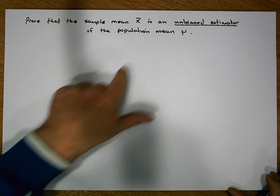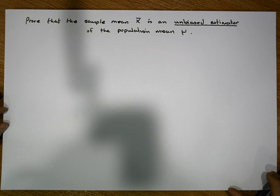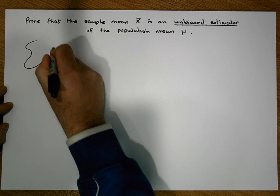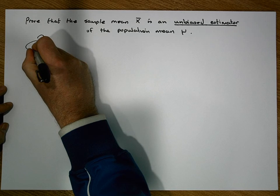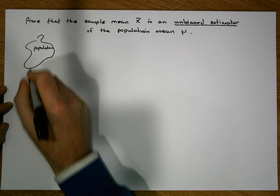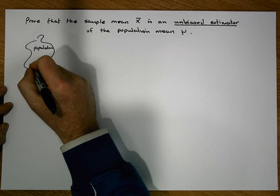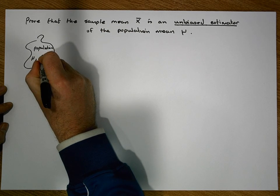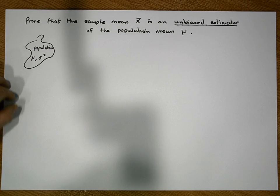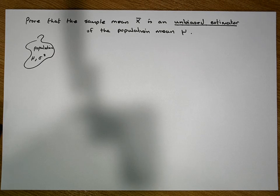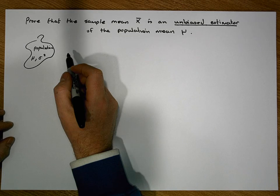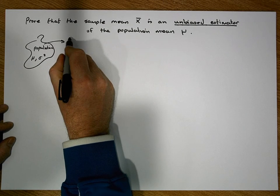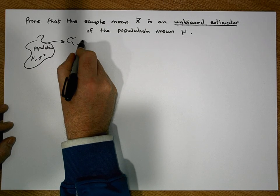Let's keep in mind what we mean by an unbiased estimator. Let's say for argument's sake that we have some sort of population. Here's our population, and let's say that this population has a mean value of mu and a variance of sigma squared. What we're going to do is randomly select samples from this particular population.